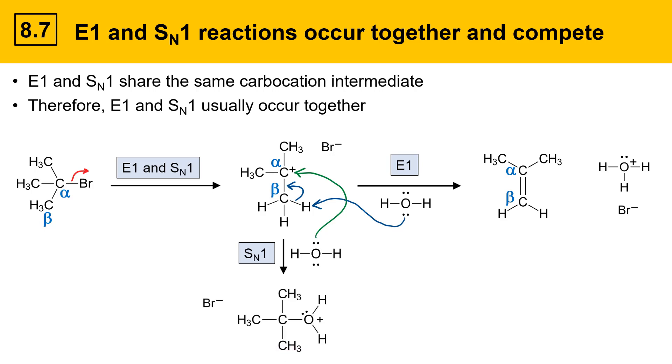As is common with SN1 mechanisms, there'd be a subsequent deprotonation step, where the initially formed substitution product would get deprotonated to give a neutral alcohol species, and a conjugate acid, and the leaving group. These are the two organic products of the overall reaction. There's an elimination product, and there's a substitution product.